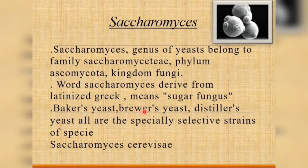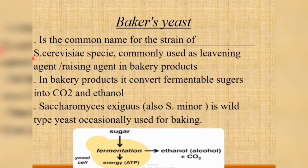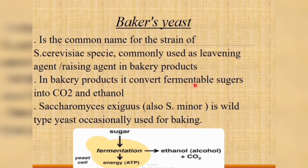Baker's yeast, brewer's yeast, and distiller's yeast are all specially selected strains of the species Saccharomyces cerevisiae. Baker's yeast is the common name of the strain of S. cerevisiae commonly used as a leavening or rising agent in bakery products. In bakery products, it converts fermentable sugars into carbon dioxide and ethanol.